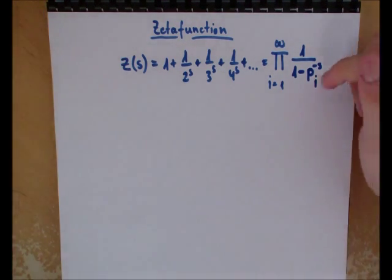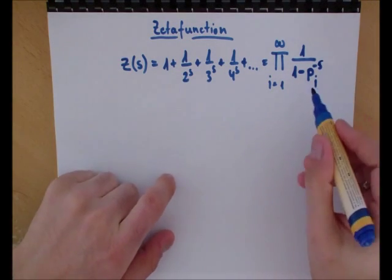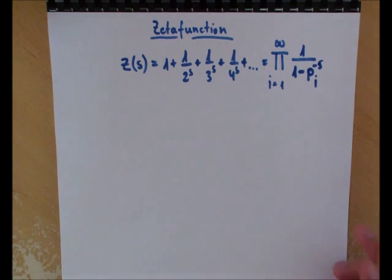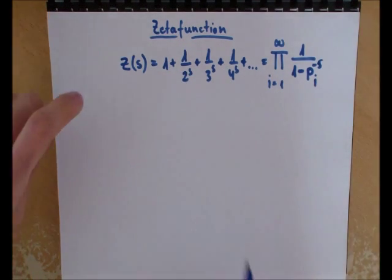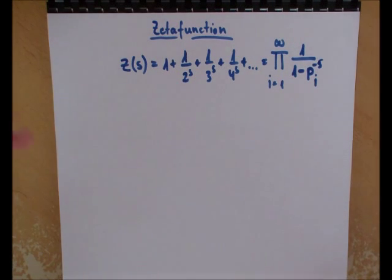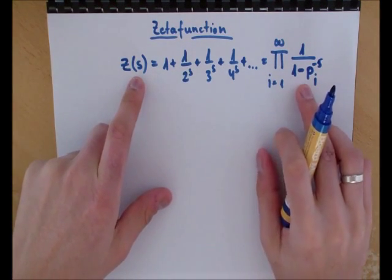One can prove this statement in two ways. I will do in this video the first way, which is the original way, or the way Euler did it. This kind of representation of the zeta function is the Euler product.